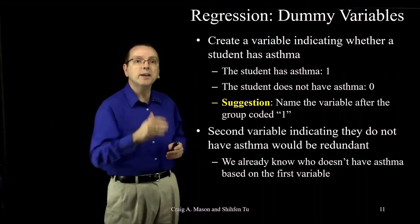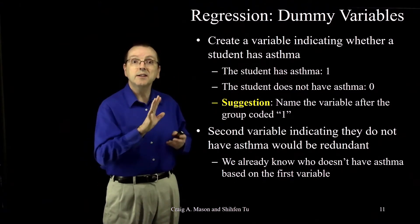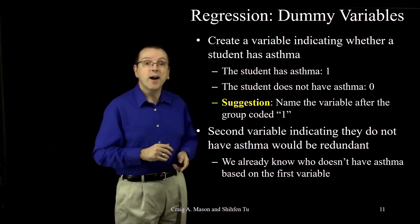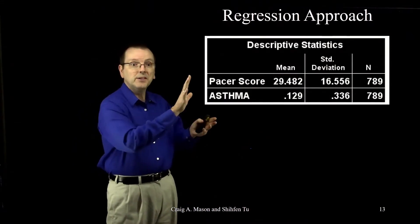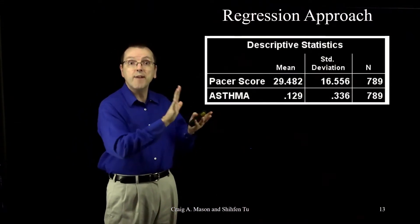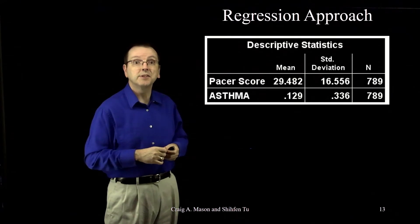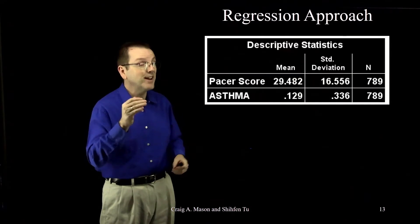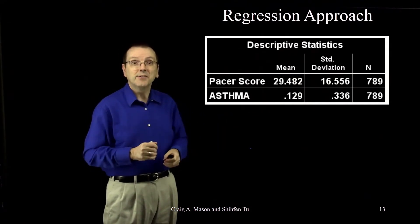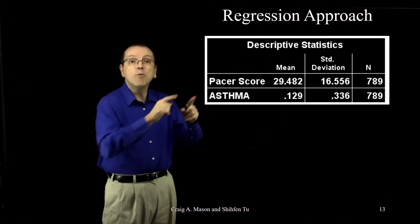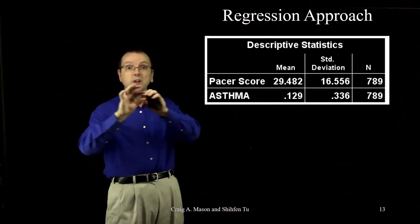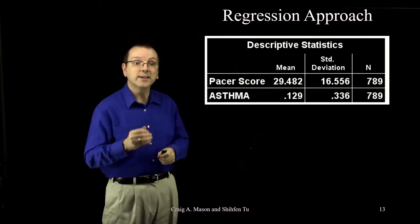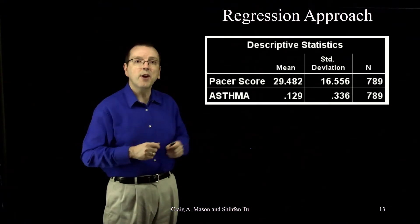With that, we're ready to run our regression analysis using the dummy variable for our dichotomous predictor. Here are the descriptive statistics for the variables in our regression analysis. Notice that it's based on a total N of 789 students. The overall mean for PACER scores across all 789 students is 29.482.